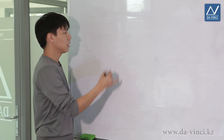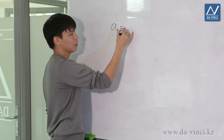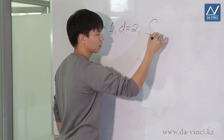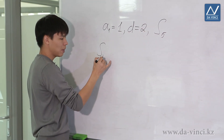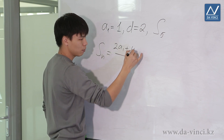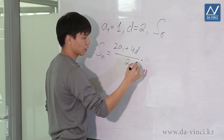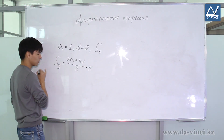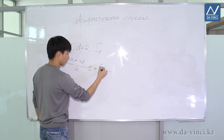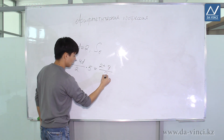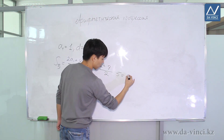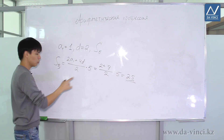Let's take a look at an example. We have an arithmetic progression with a1 equal to 1 and difference d equal to 2. It is required to find the sum of five terms. Using the formula, S5 equals (2a1 plus (n minus 1)d) divided by 2, times n — that is (2 plus 4 times 2) divided by 2, times 5, which equals (2 plus 8) divided by 2 times 5 — 5 times 5 equals 25. So the sum of the first five terms is 25.